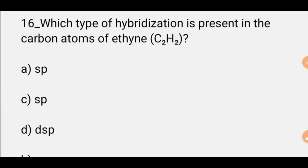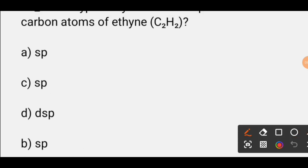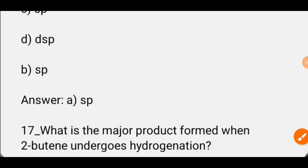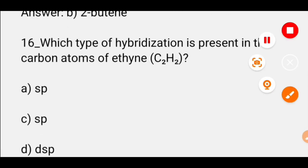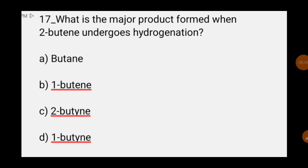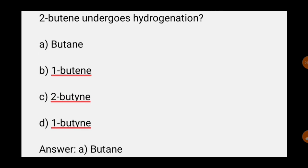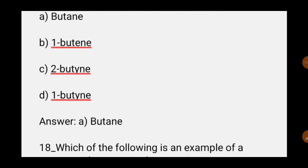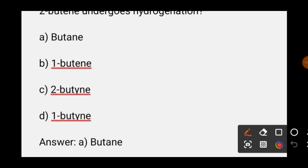MCQ number sixteen: Which type of hybridization is present in the carbon atom of ethyne? The correct option is sp. MCQ number seventeen: What is the major product formed when 2-butene undergoes hydrogenation? When 2-butene undergoes hydrogenation or addition of hydrogen, the answer is butane.